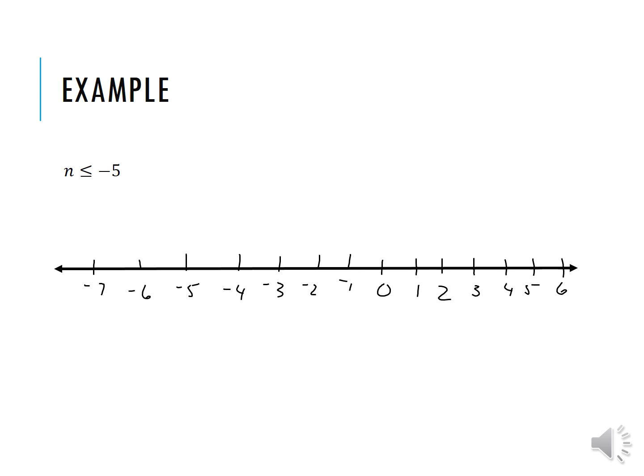Here's an example. n is less than or equal to negative 5. Negative 5 is included in this particular inequality because it's less than or equal to, so it's going to be a closed circle. Now you need to figure out which direction the arrow goes in. Pause the video at this point to give yourself a chance to try the example.